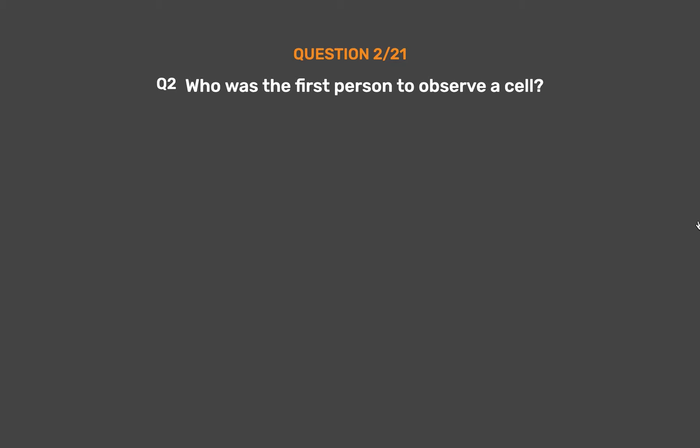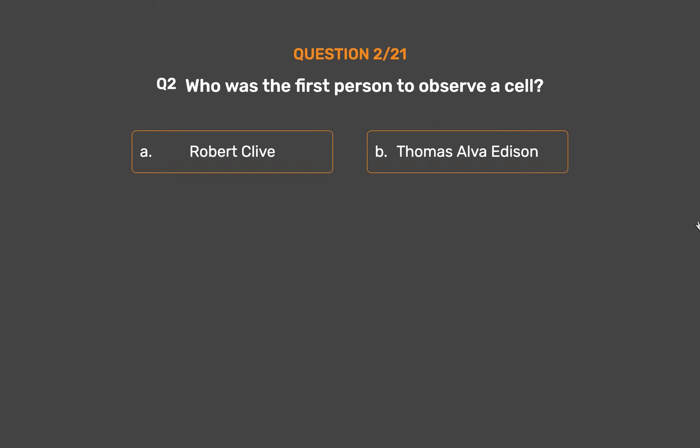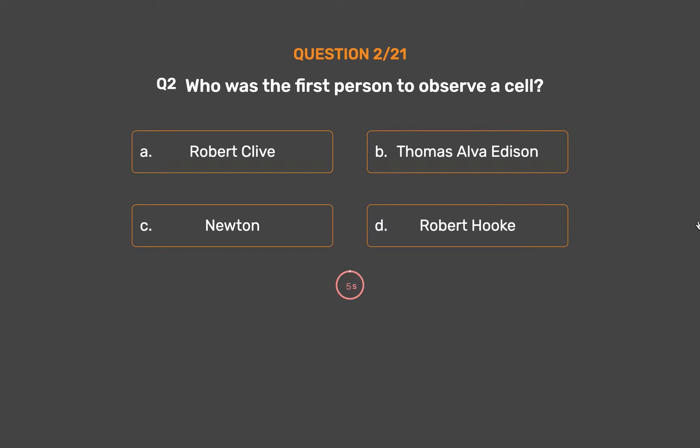Question No. 2: Who was the first person to observe a cell? Option A: Robert Clive. Option B: Thomas Alva Edison. Option C: Newton. Option D: Robert Hooke.